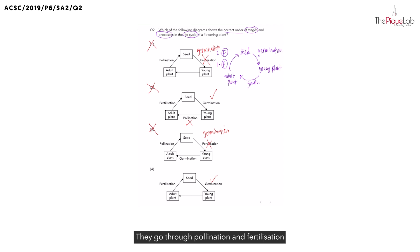They go through pollination and fertilization. For the flowers to become the fruit, the fruit contains the seeds, and then allows the life cycle to continue. That gives us our correct answer as option 4.